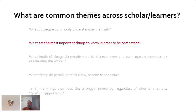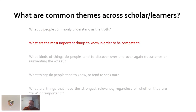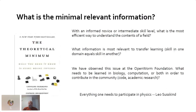Even if we can achieve objectivity, does this lead to group consensus or gatekeeping? Who's telling the history and who's presenting it? There are a lot of common themes across scholars and learners. The key question I want to focus on is: what are the most important things we need to know in order to be competent?